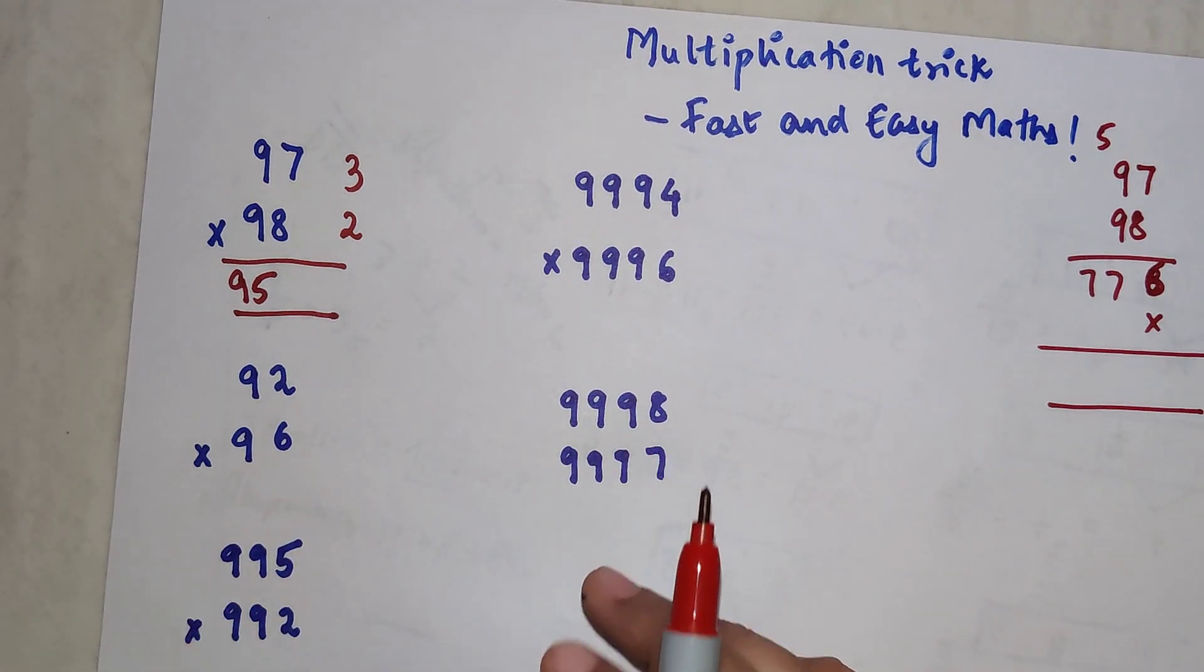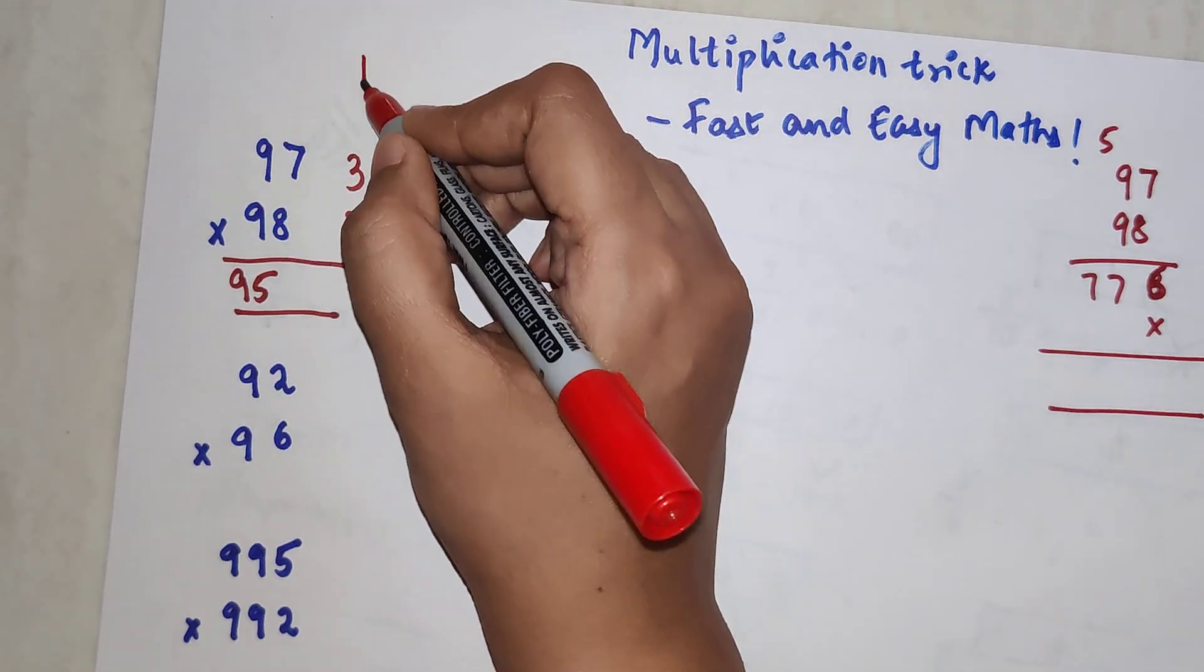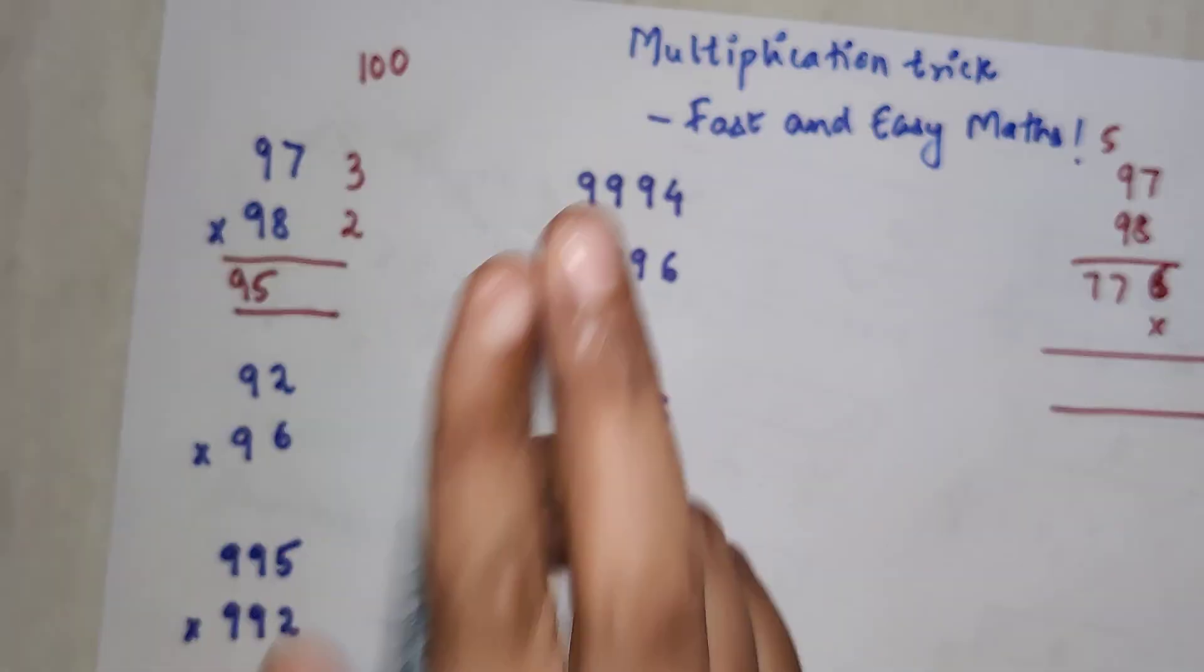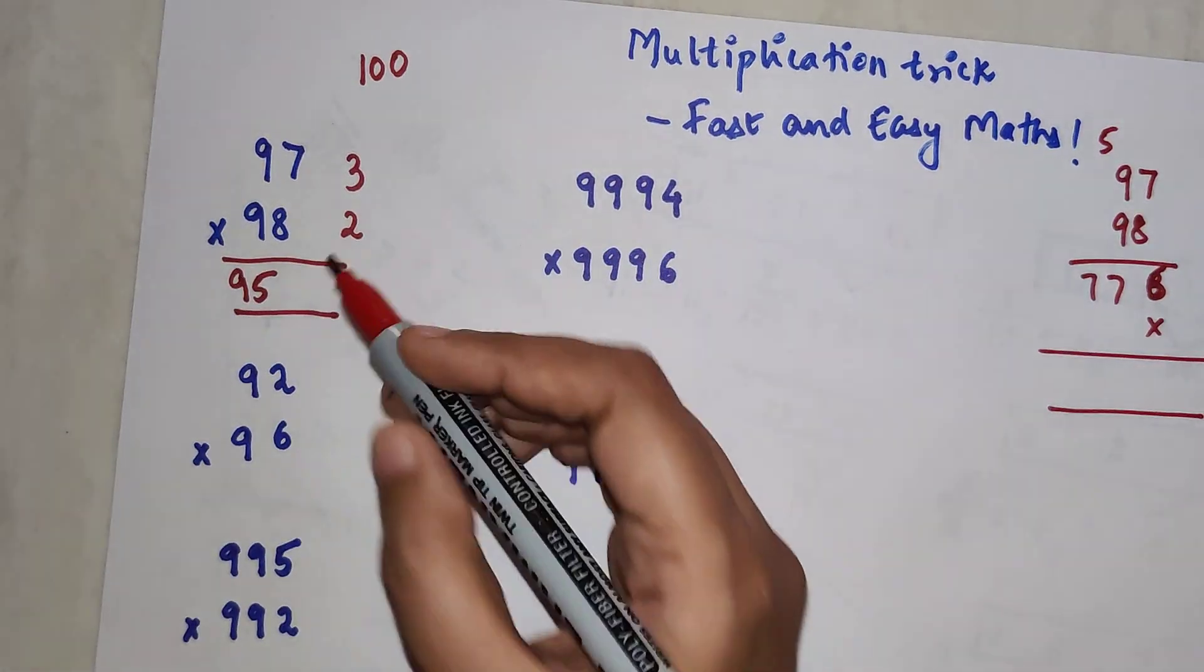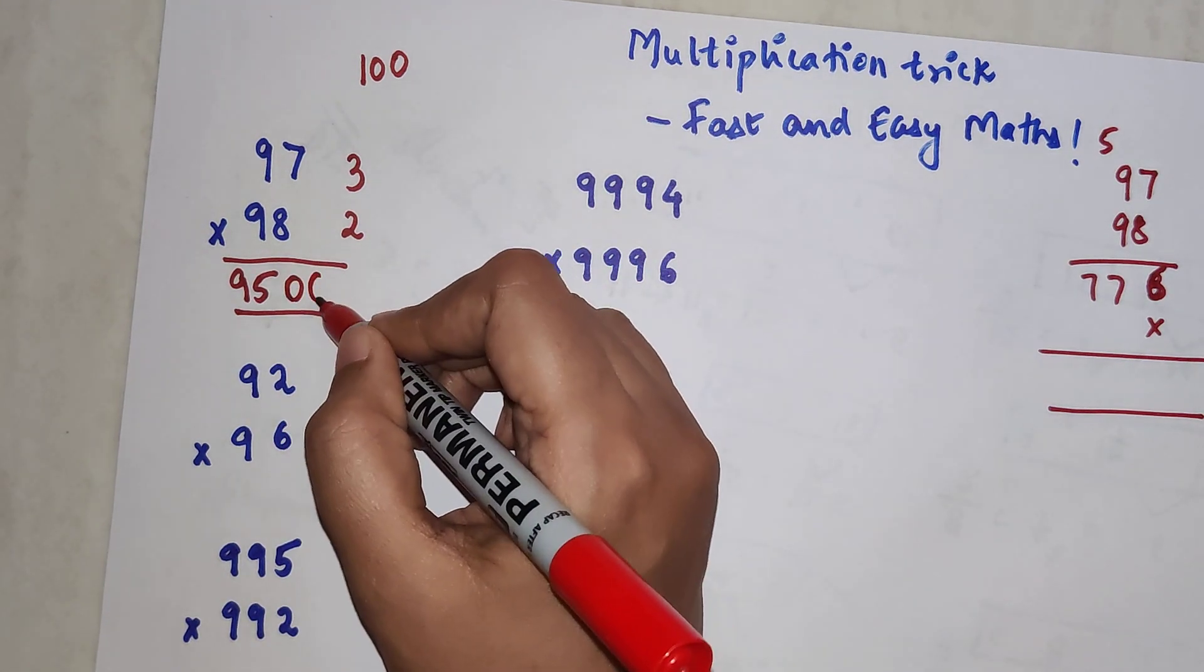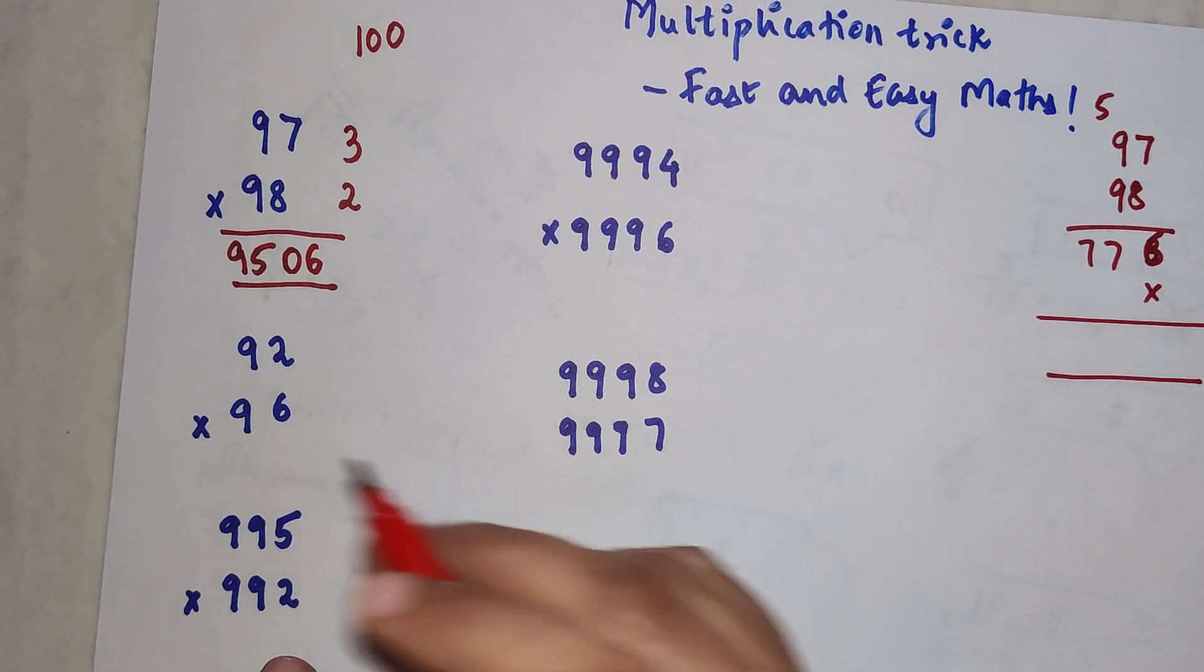Now this is very interesting and important to pay attention to: these two numbers were close to 100, right? 100 has how many zeros? Two zeros. So your second part will also have two digits. Instead of writing just 6, we'll write 06. I hope you've understood how to use this particular trick.